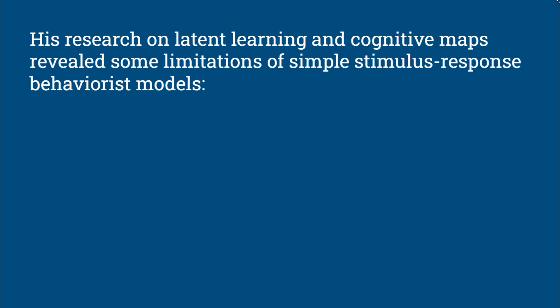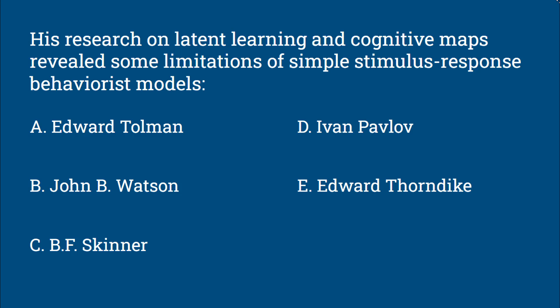Question 9: His research on latent learning and cognitive maps revealed some limitations of simple stimulus-response behaviorist models. Was this Edward Tolman, John B. Watson, B.F. Skinner, Ivan Pavlov, or Edward Thorndike?